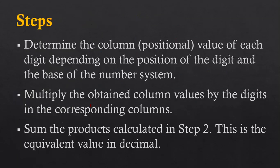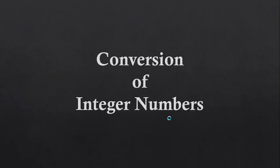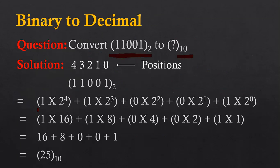The next step says: multiply the obtained column values by the digits in the corresponding columns. Here I am multiplying the digit 1 by 2 raised to 4. The base is 2 and the positional value of this digit 1 is 4. So the digit 1 is multiplied by 2 raised to 4, where 2 is the base and 4 is the position value.